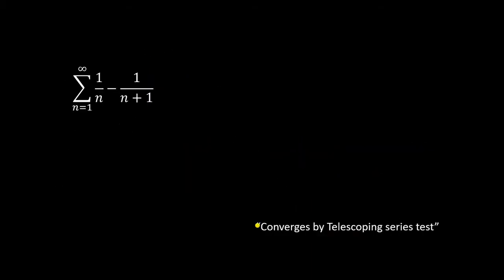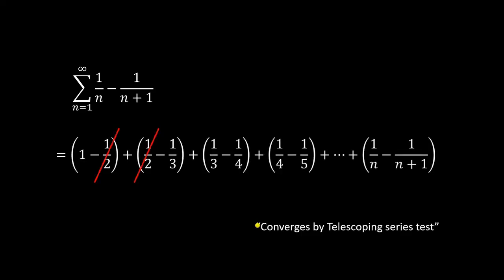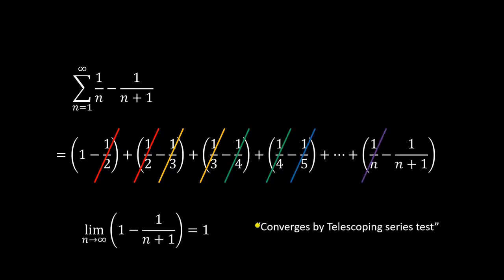The next type of series you should know is the telescoping series. This series always converges. You can recognize the telescoping series as being a fraction minus another fraction. If we list out the first few terms, you'll notice a pattern — things begin to cancel. It may not always be as obvious, but if it is a telescoping series, you will get all this cancellation. The best way to find what it converges to is to write out all the terms, cancel everything out, and for all the stuff that remains, take the limit as n approaches infinity. That is your answer.